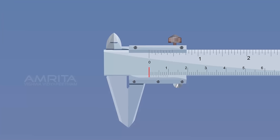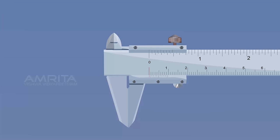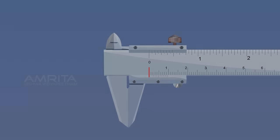Check for zero error. Here, no error is visible as the zero division of the main scale coincides with the zero of the vernier scale.